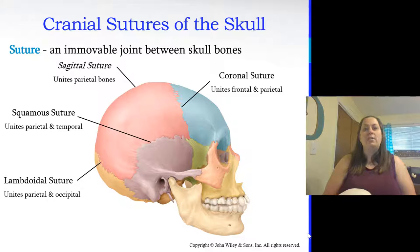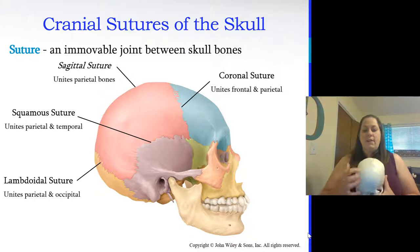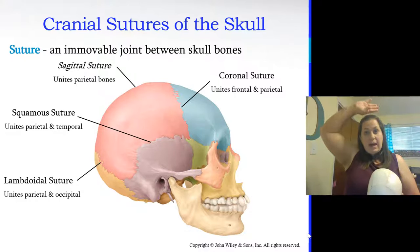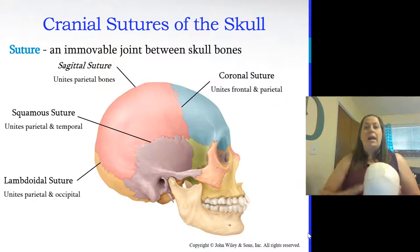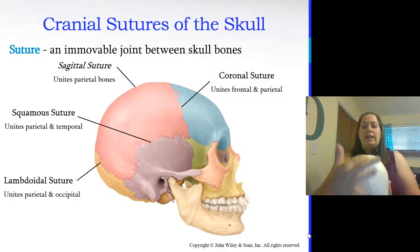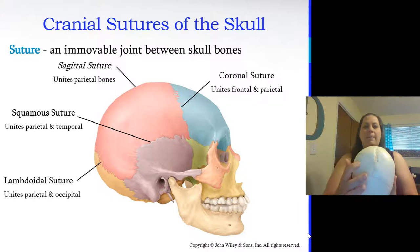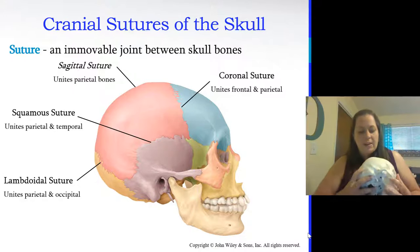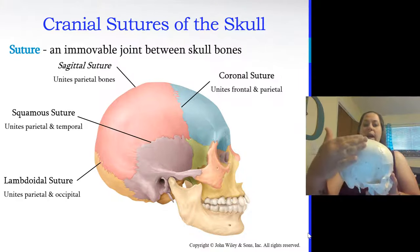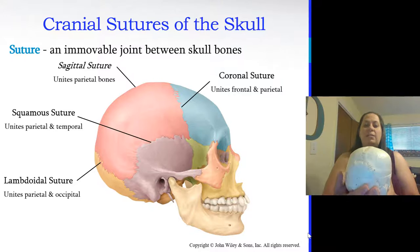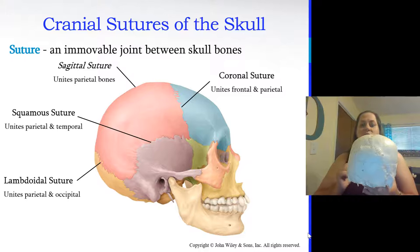The cranial sutures are immovable joints between skull bones that hold them together. The coronal suture unites the frontal and parietal bones. The sagittal suture runs down the middle between the two parietal bones. The squamous suture unites the parietal bones with the temporal bones. The lambdoid suture at the back unites the parietal bones to the occipital bone. These are the sutures you need to know.